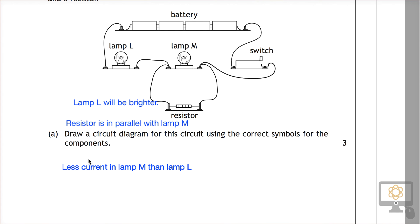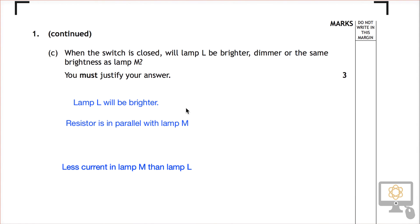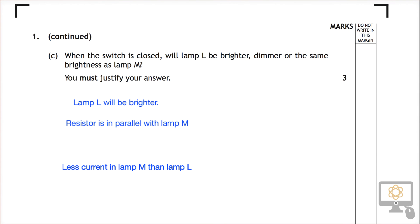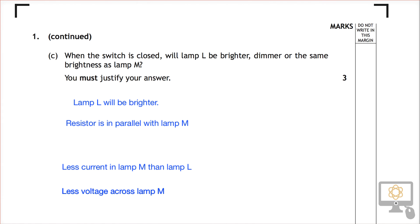So what we can say is, as well as saying there's less current in lamp M, we can also say there is less voltage across lamp M. So we'll write that in down here in the correct spot. So let's do that. Less voltage across lamp M.